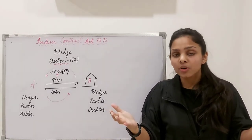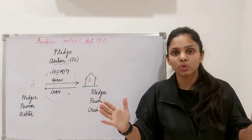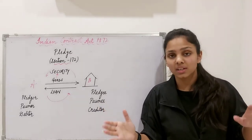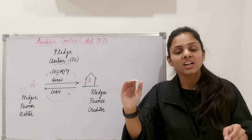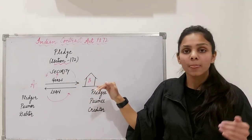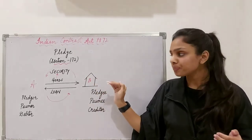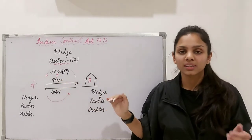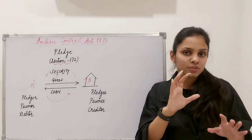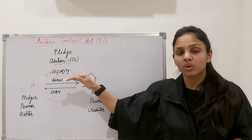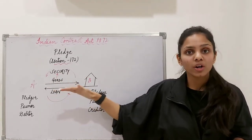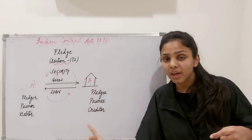In both contracts, there is delivery and transfer of physical possession of goods from one person to the other. But in bailment, it is for some specific purpose — which could be any specific purpose — whereas in pledge, the specific purpose is to act as a security. Security means that if you commit a breach of contract of pledge, upon your failure to perform your part of obligation, certain consequences follow.